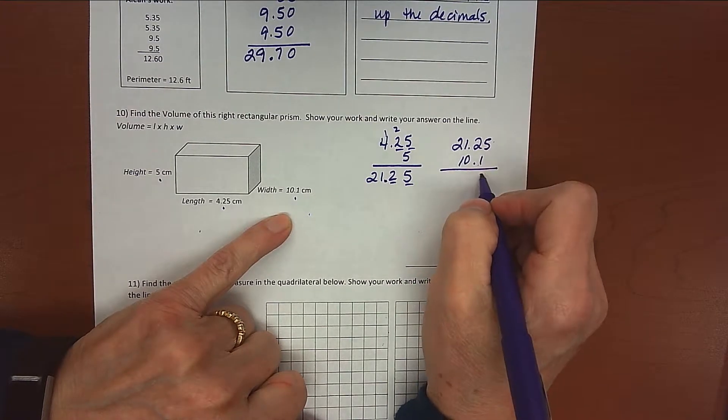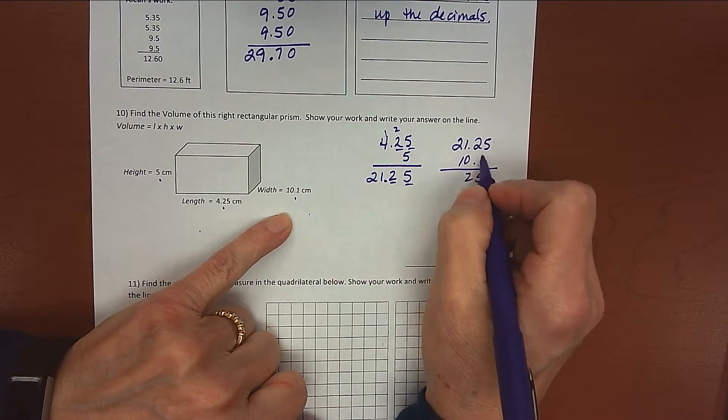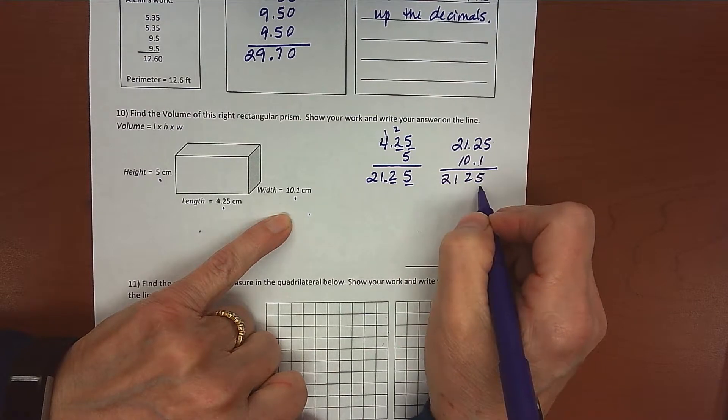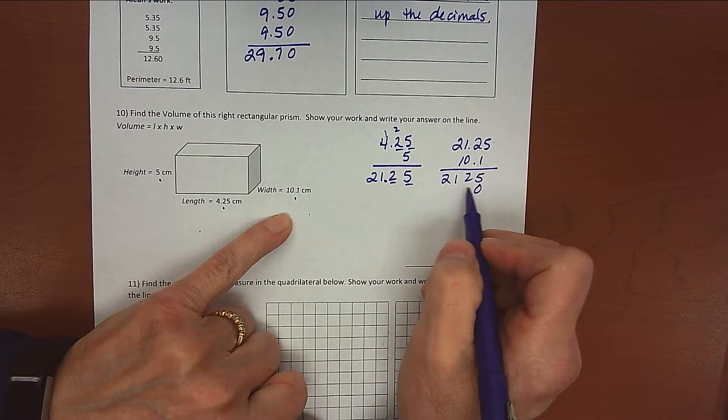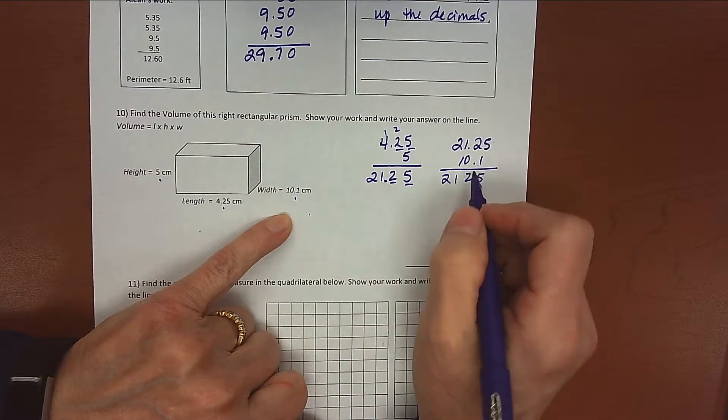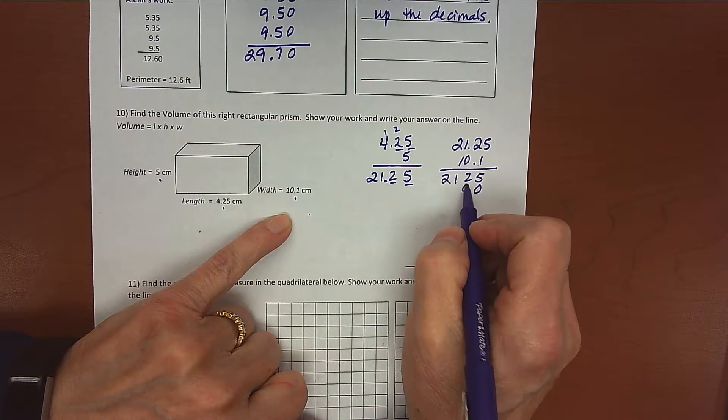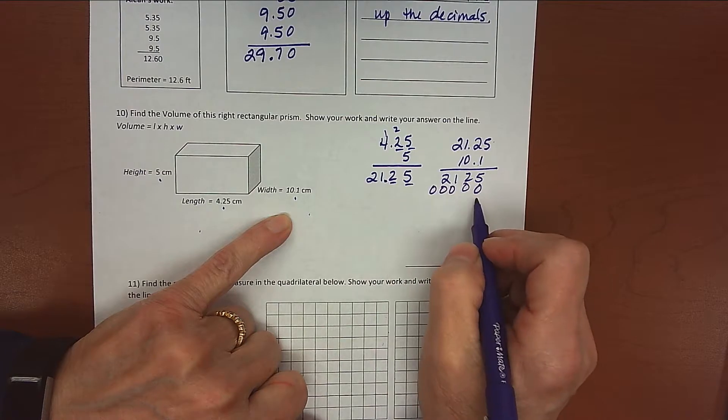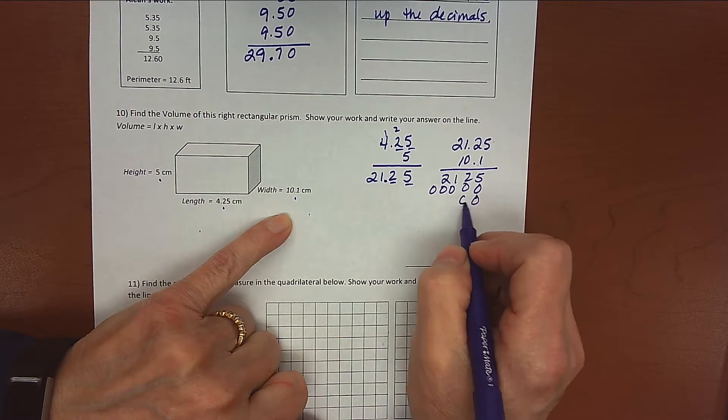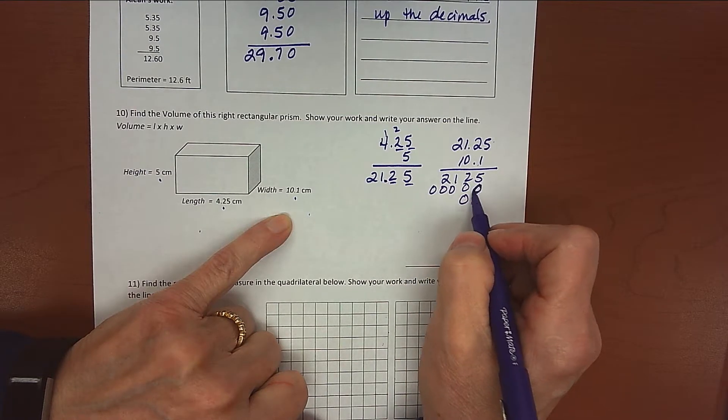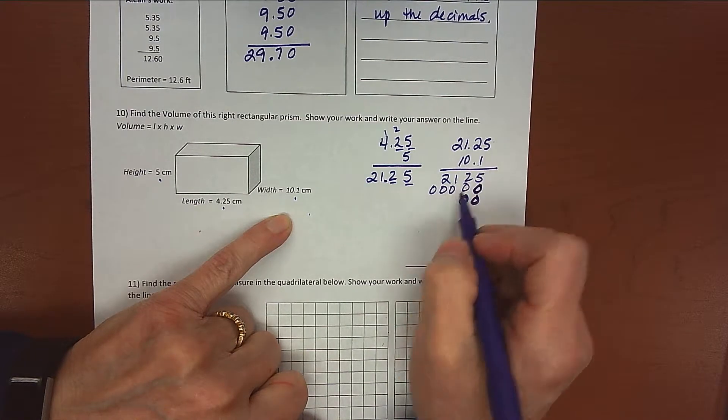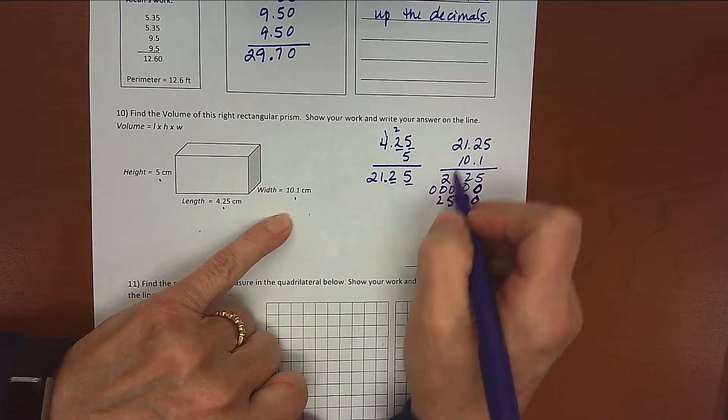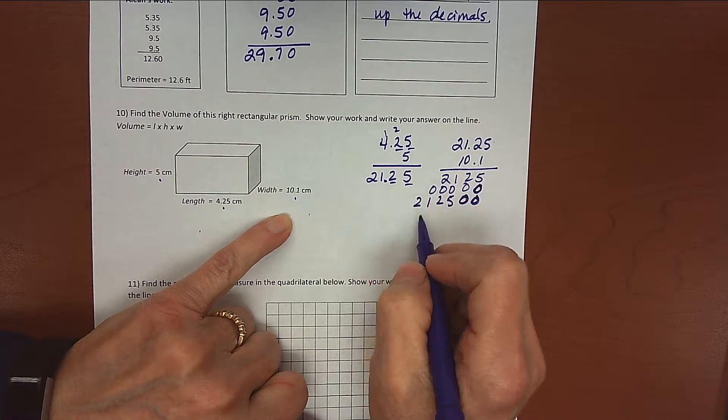All right, 1 times 5 is 5. 1 times 2 is 2. 1 and 2. Add a 0, and I'm not going to multiply this out. This would just be all 0s. It would be 4 0s there. You can do that if you want to. Moving over a digit, in fact, I'll just go ahead and put them in. All right, moving over a digit, 2 0s this time. We added 1 0 here. That means we have to have 2 0s here. And now we multiply by 1 again. 1 times 5 is 5. 1 times 2 is 2. 1 times 1 is 1. 1 times 2 is 2.